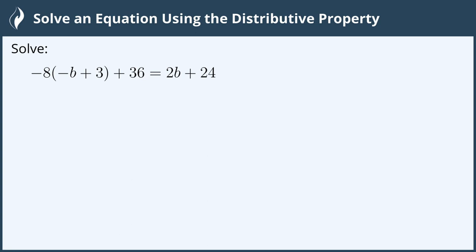On the left side we have a variable that's stuck inside the parentheses. To get it out we'll need to do the distributive property because once we do that the parentheses will go away. So we will multiply the negative 8 into both terms inside the parentheses.